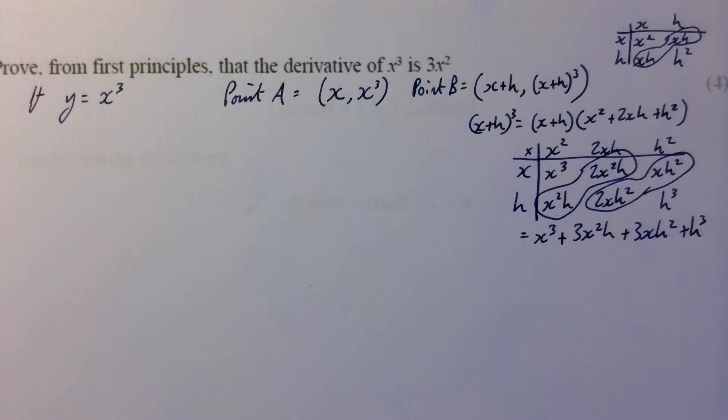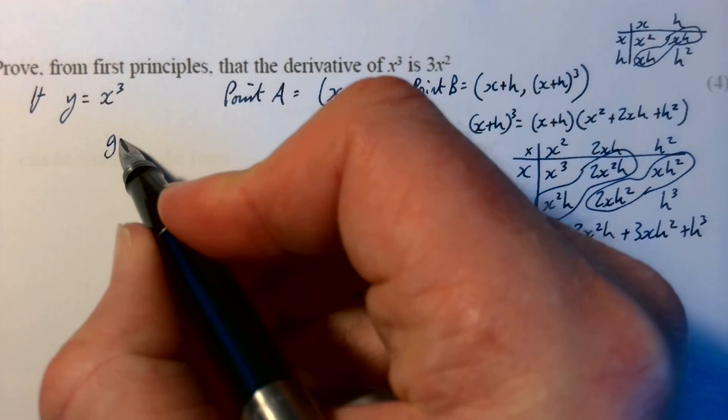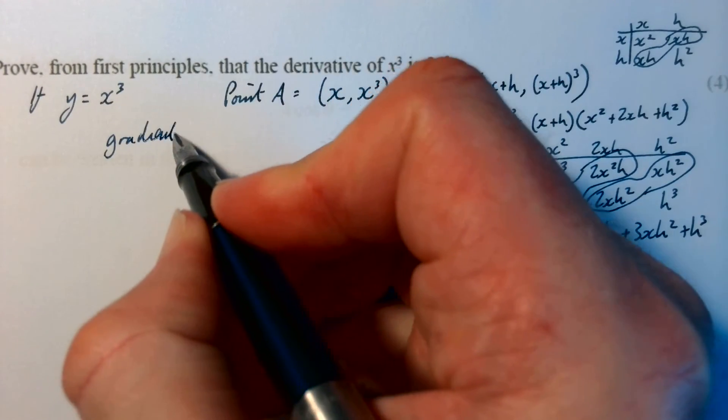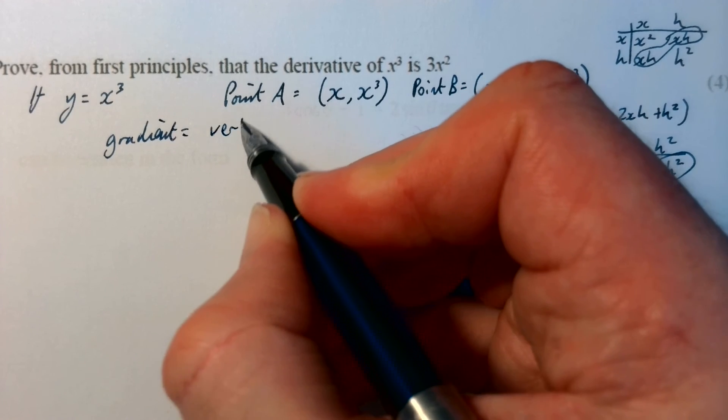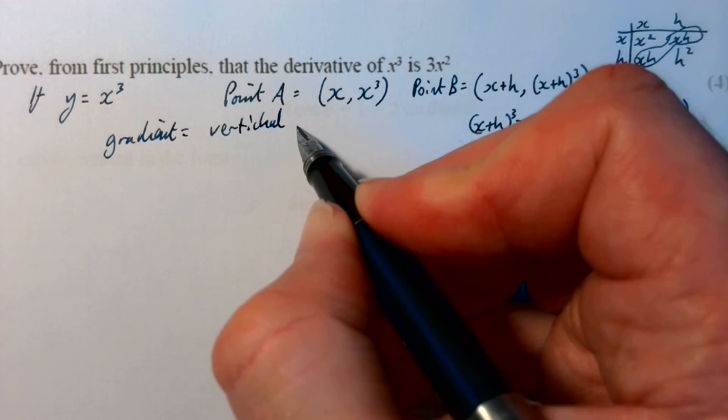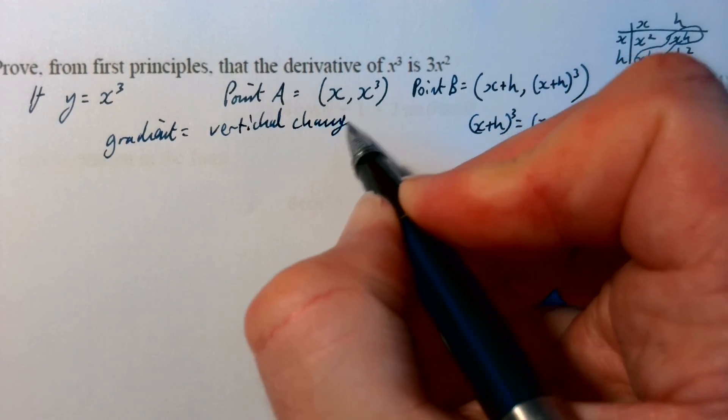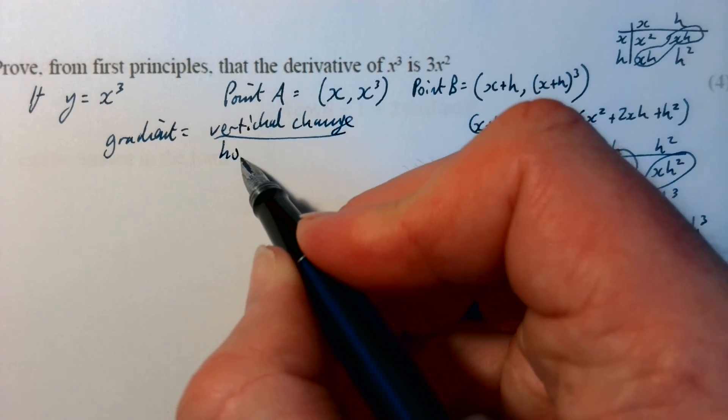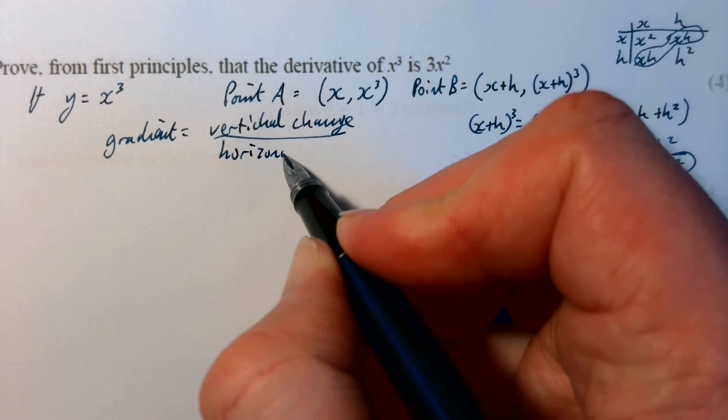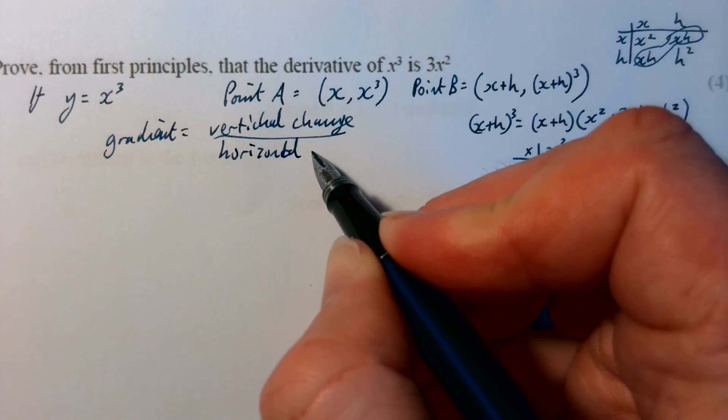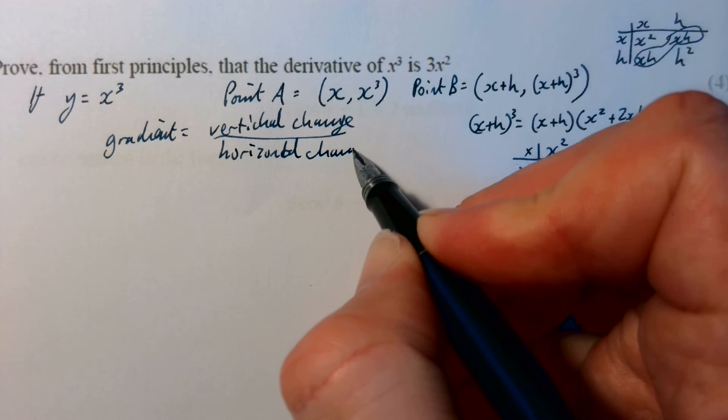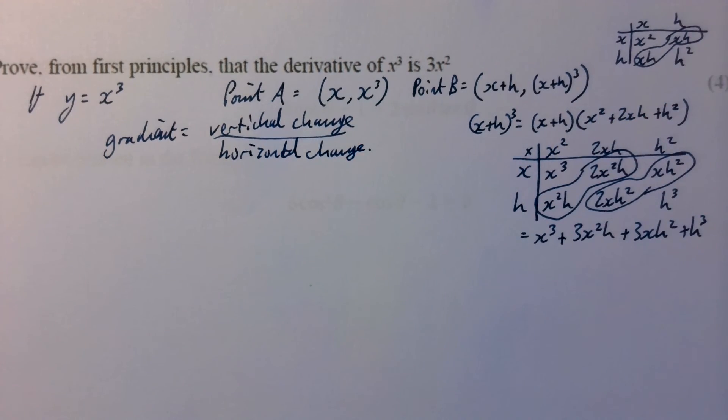So you've got all of that, you can do all that working to one side. You then just need to remember that gradient is your vertical change over horizontal change. You don't need to write that really.